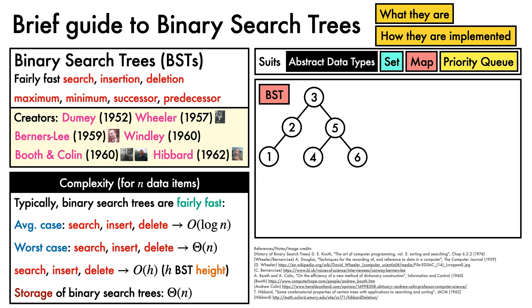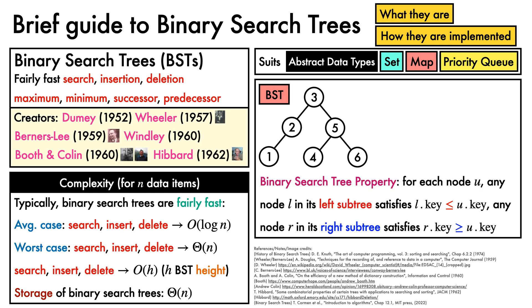The essential characteristic of binary search trees is that they satisfy what's referred to as the binary search tree property. For each node U in the tree, any node L in its left subtree has a key that is less than or equal to U's key, and any node R in its right subtree has a key that is greater than or equal to U's key. For example, starting from the root node with key 3, we can see that all nodes in its left subtree are less than or equal to 3, while all nodes in its right subtree are greater than or equal to 3. We can also pick another node like this one with a key of 5. We see that 4 is less than 5 and thus on the left, while 6 is greater than 5 and thus on the right.